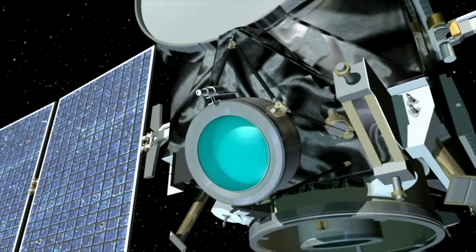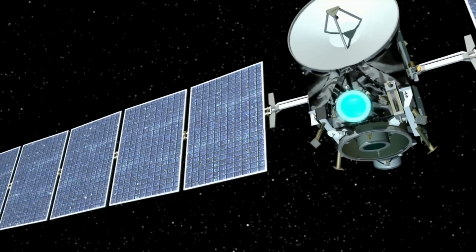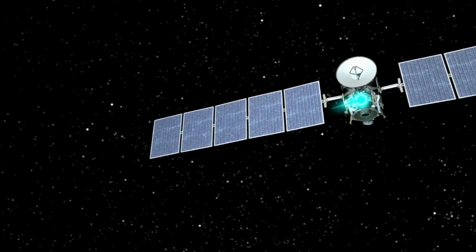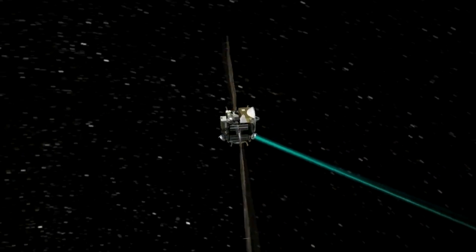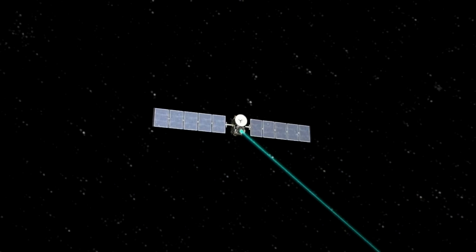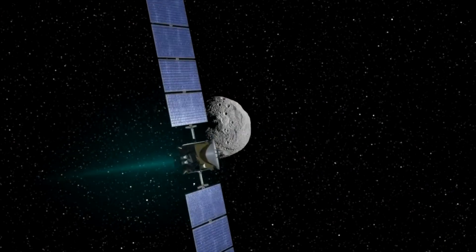Ion thrusters are super useful because they're relatively simple devices and very energy efficient, leading them to be used on deep space missions like NASA's Dawn mission to orbit Ceres and Vesta, or JAXA's Hayabusa missions to sample asteroids Itokawa and Ryugu.